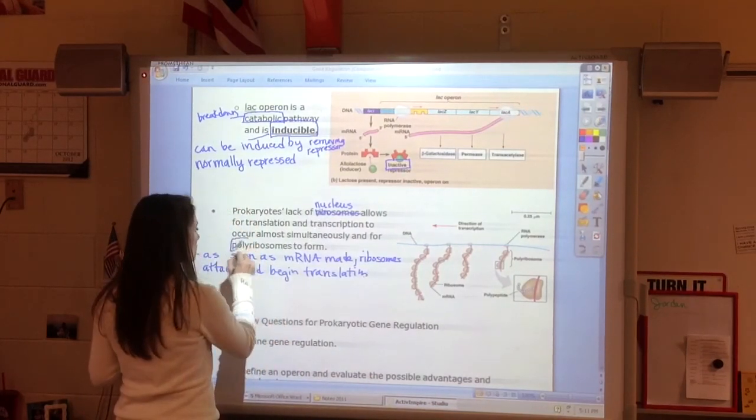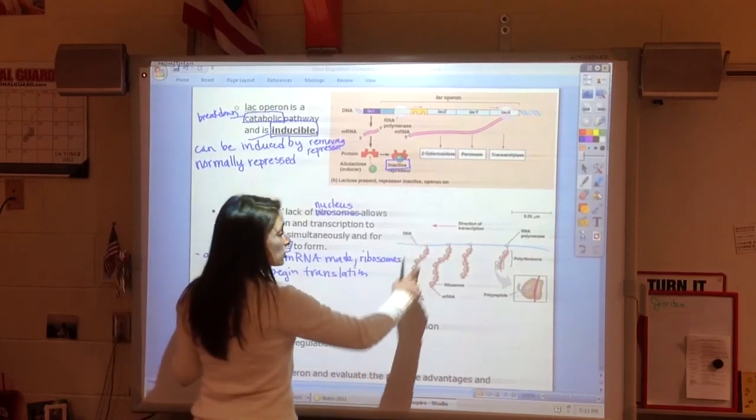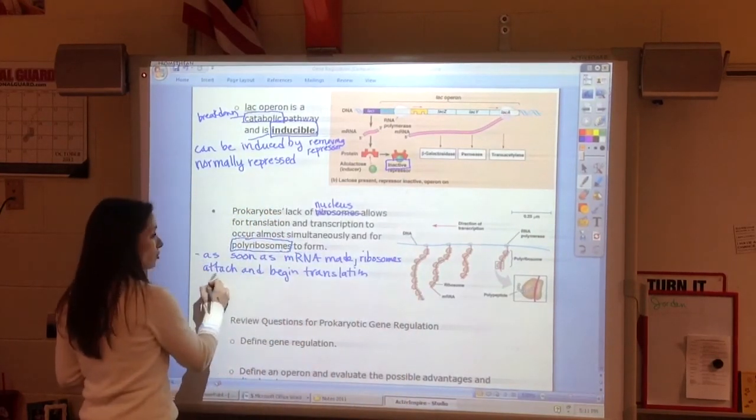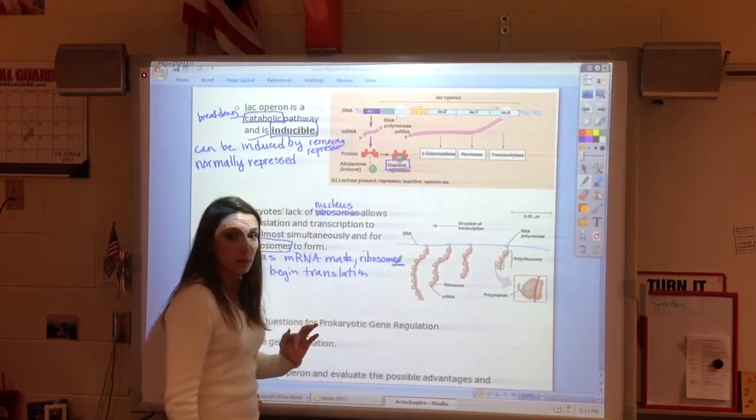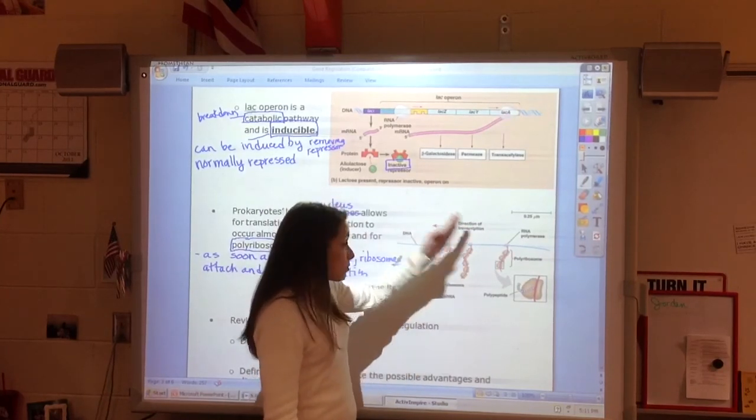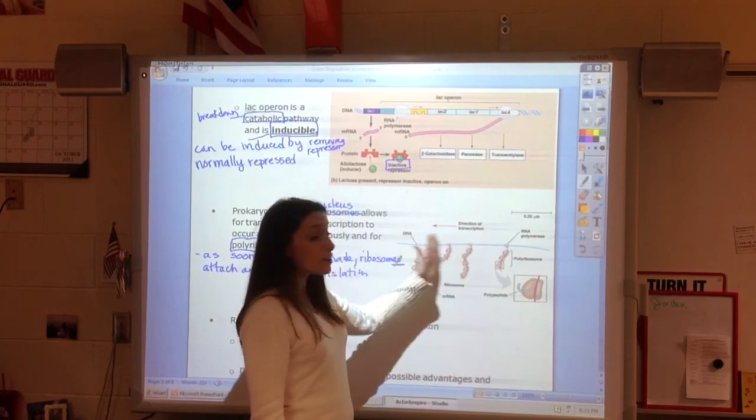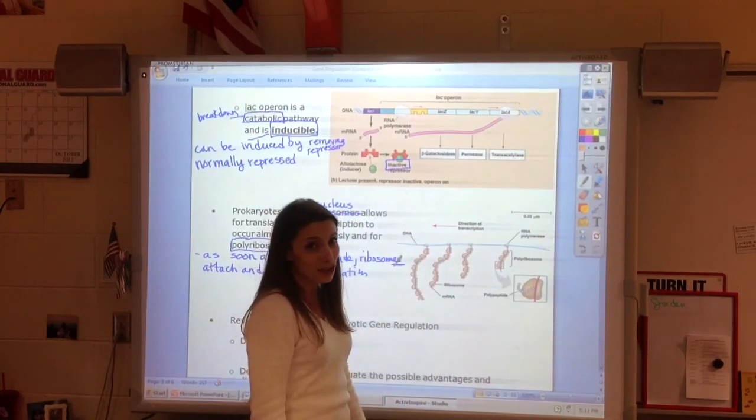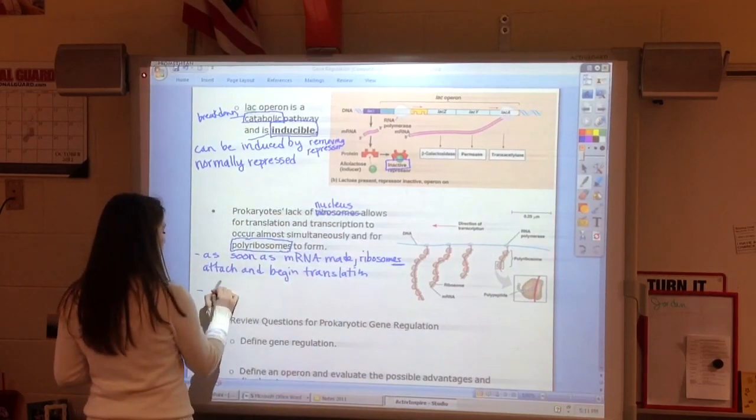This is unique to prokaryotic cells. We do need to know this concept of polyribosomes, and this means that actually many ribosomes are translating at the same time. We've got one piece of mRNA and multiple ribosomes are already working on that mRNA before it's even done being transcribed. This allows bacteria to have a very quick reaction.